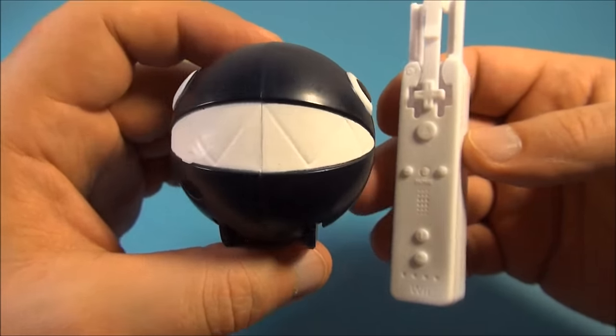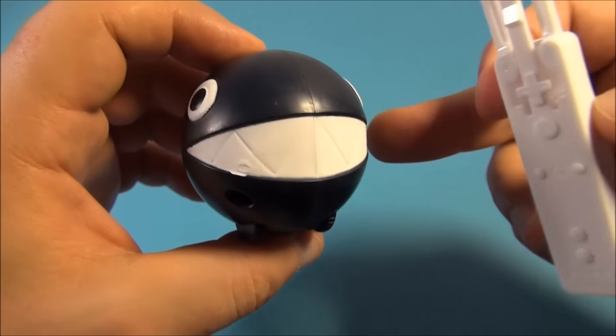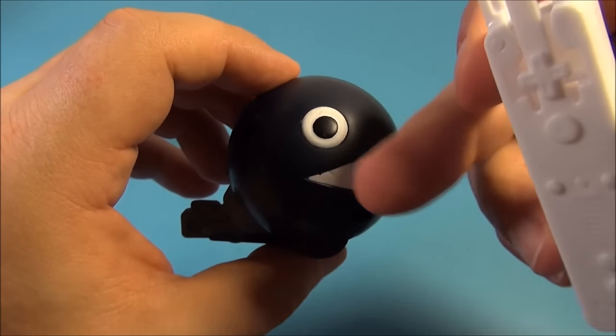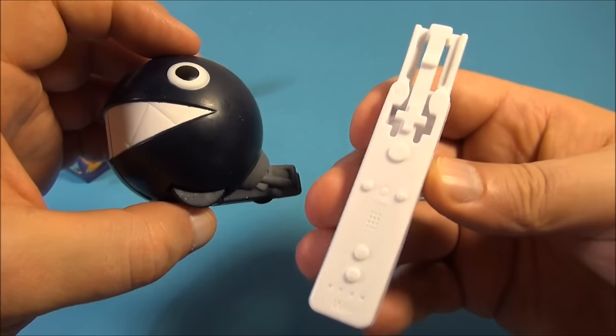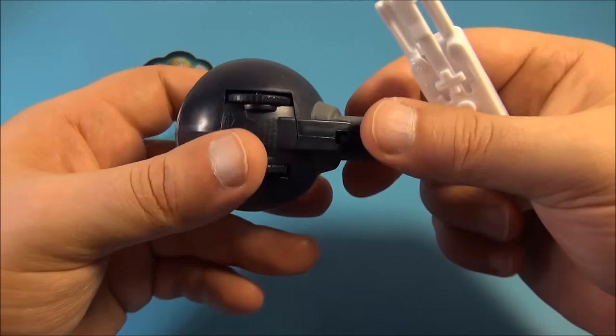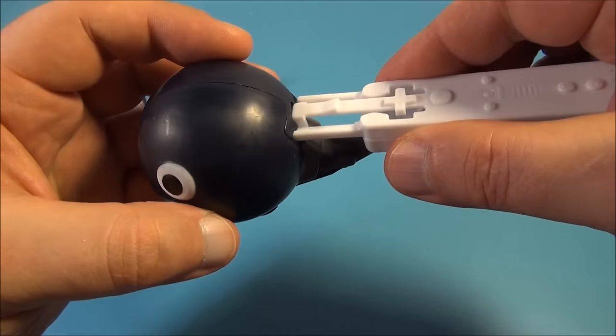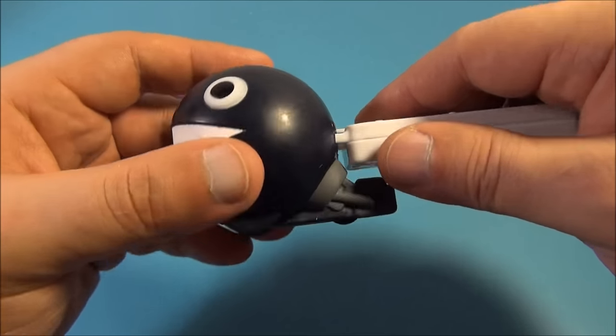Next up we have the Chain Chomp launcher. Now this one's kind of cool, look at that big old smile on them, razor sharp teeth there, big round fish eyes there, it's kind of creepy. And then you have this controller here and what you do is you plug it into the back here and it's spring loaded so it locks right in.